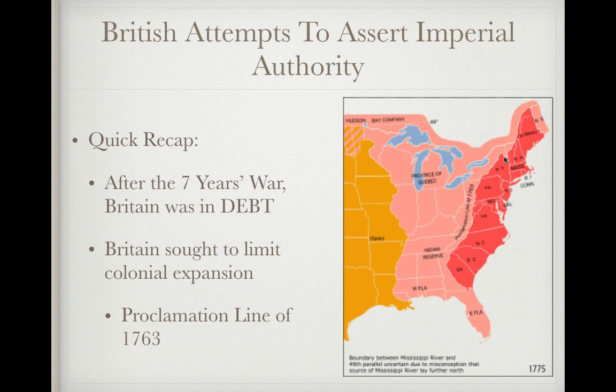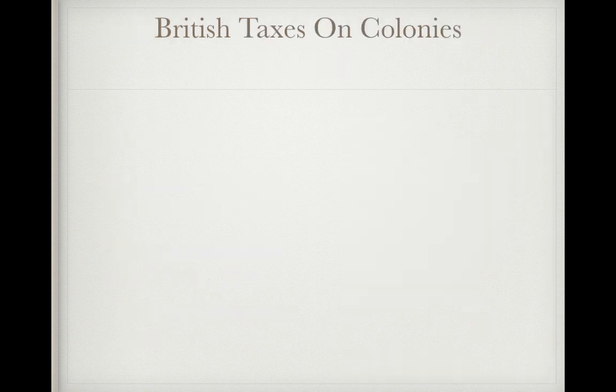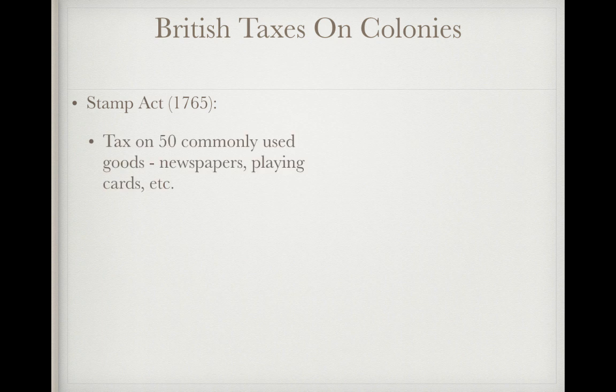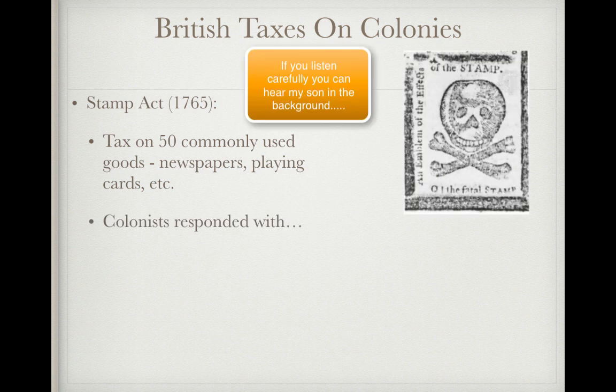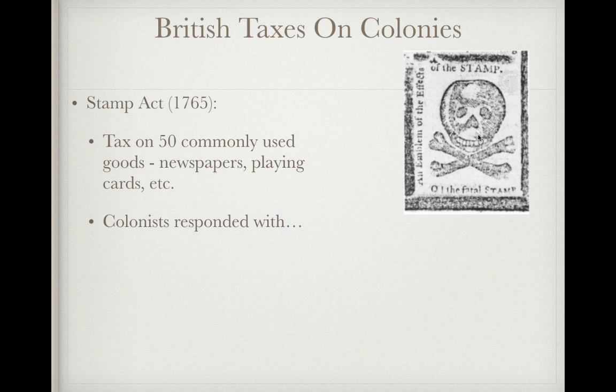Remember, that is the second P in PEEP. So Britain's in debt, and they're going to pass a bunch of taxes on the colonies. One of the most important taxes is the Stamp Act from 1765. This was a tax on 50 commonly used goods, such as newspapers, playing cards, and marriage certificates. If it was made from paper, chances are it was taxed, and this would affect nearly everyone. Colonists were not going to be happy — they would view this as the death of their economy and the colonies.